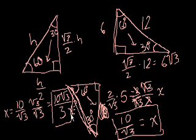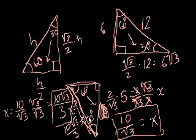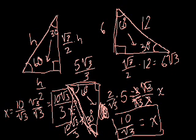So that's the hypotenuse: 10 square root of 3 over 3. And we know that the 30-degree side is half of that, so it's 5 square root of 3 over 3. Anyway, I think that gives you a sense of 30-60-90 triangles. I think you might be ready now to try some of the level 2 Pythagorean theorem problems. Have fun.